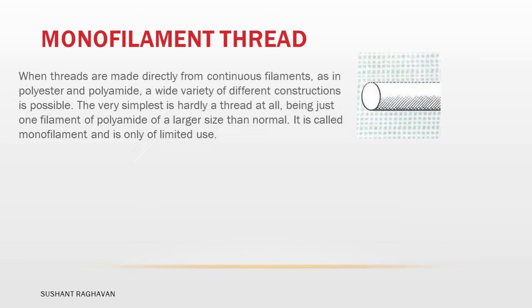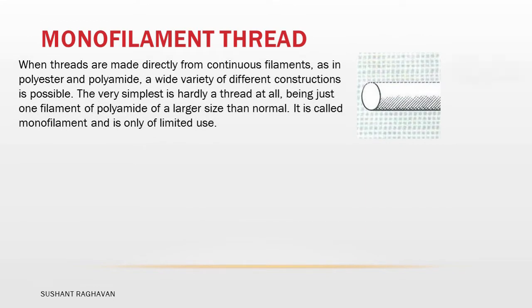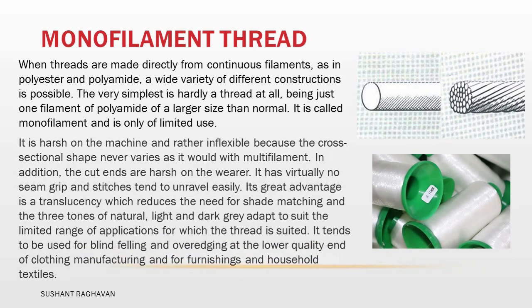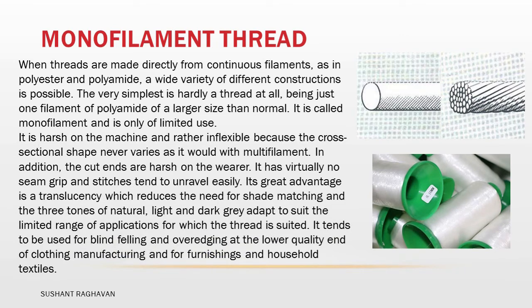Monofilament. When threads are made directly from continuous filaments, as in polyester and polyamide, a wide variety of different constructions is possible. The very simplest is hardly a thread at all, being just one filament of polyamide of a larger size than normal. It is called monofilament and is only of limited use. It is harsh on the machine and rather inflexible because the cross-sectional shape never varies as it would with multifilament.